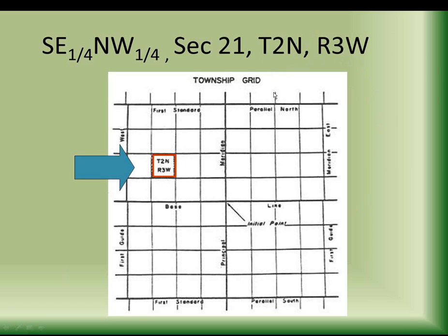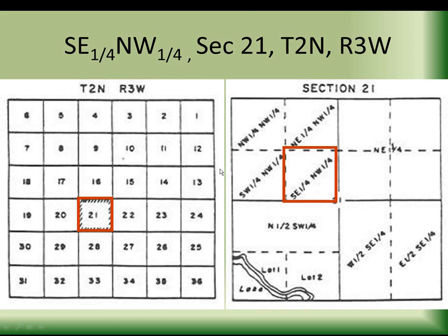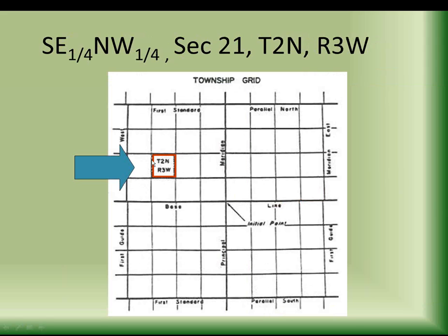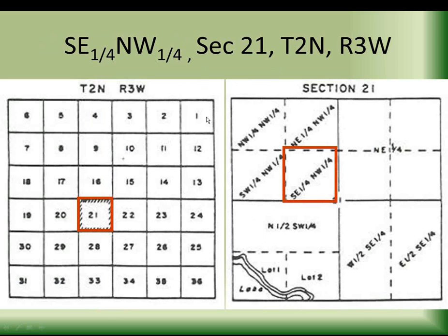Starting from township 2 north, range 3 west: here's the initial point of survey, the baseline, and the principal meridian. Counting two north and three west, that's the township we'll be working in. Within that, we go to section 21 — here we are. Now within that, we're in the southeast one quarter of the northwest one quarter — the northwest one quarter is right here, and the southeast one quarter within that is right there. You can see as you get into it, a creek running here makes properties get a little more irregular in size and shape when there are natural features to deal with.